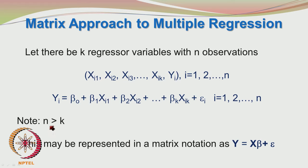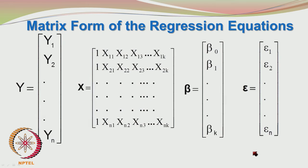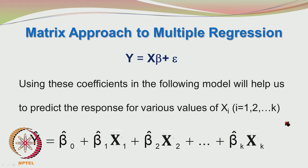This may be represented in matrix notation as Y equals X·beta plus epsilon, where Y is a column vector of Y1 through Yn, and X is the design matrix with rows corresponding to experimental runs and columns corresponding to model terms including main factors, interactions, and potentially quadratic terms. You have the beta column vector comprising beta0 through betak, and epsilon is the column vector of random error components epsilon1 through epsilon_n.